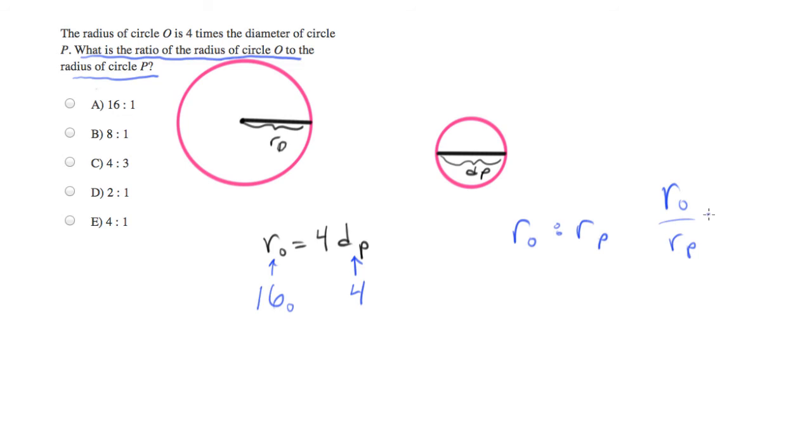Now we already have the radius of O, that's 16. And we have a number for the diameter of P, which is 4. But we really want the radius, so we need to make that a 2.